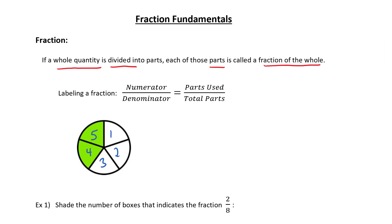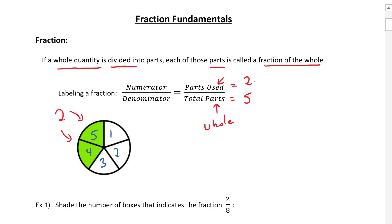How many parts are shaded in? We have two parts shaded in here and here. We can represent that as a fraction. On the bottom, we have the number of total parts that make up the whole, and on the top we have the number of parts that are used. In this case, this would be represented as five total parts and two used parts shaded in green — we write a line in between — so we can represent this fraction as two over five.